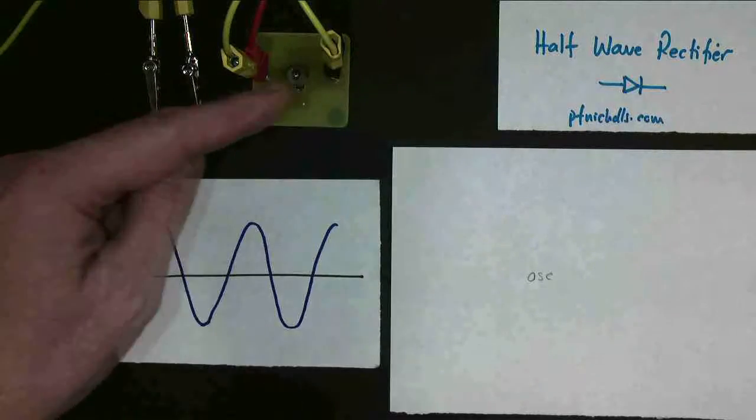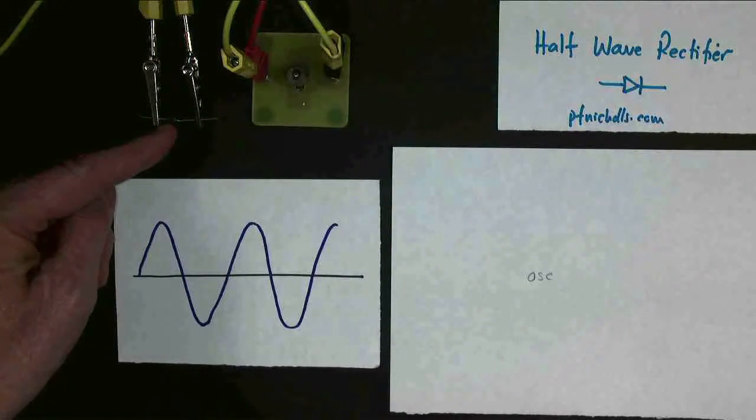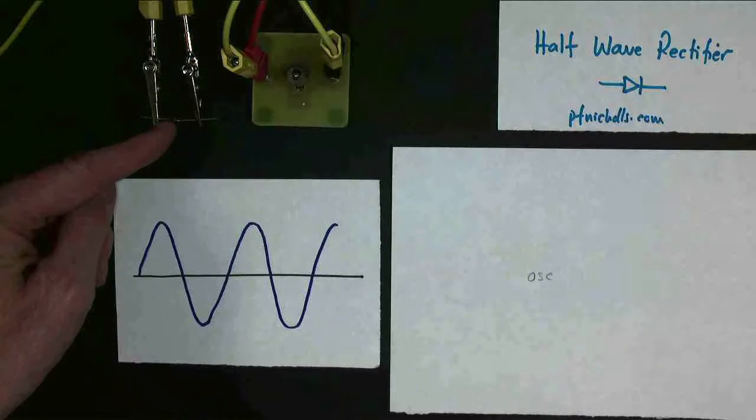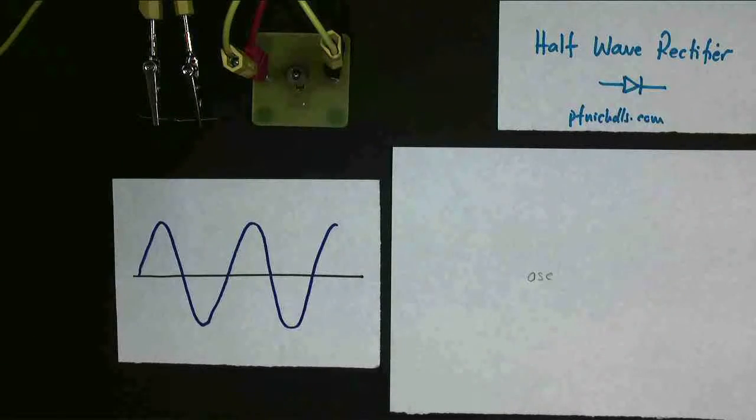I've added a diode into the yellow wires, which are the wires from the power supply to the bulb. You can immediately see that things are different. The bulb is only coming on half as often. Let's have a look on the oscilloscope and see what's happening.